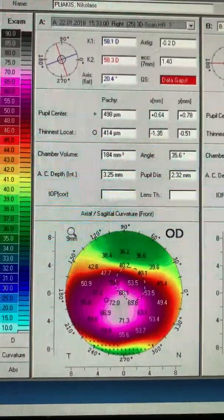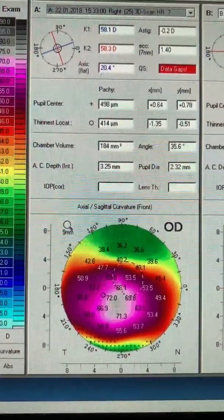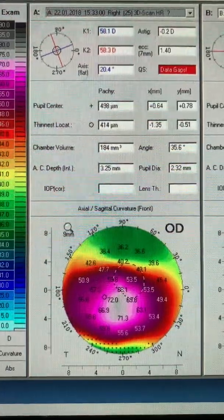Cornea cross-linking will probably stabilize the cornea, but not offer significant visual rehabilitation. So we went ahead and performed the Athens Protocol.